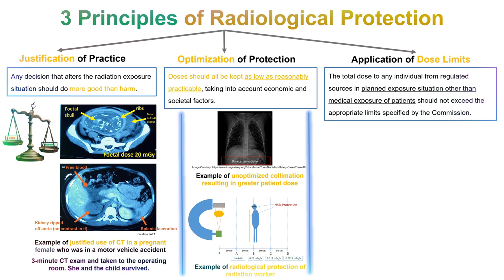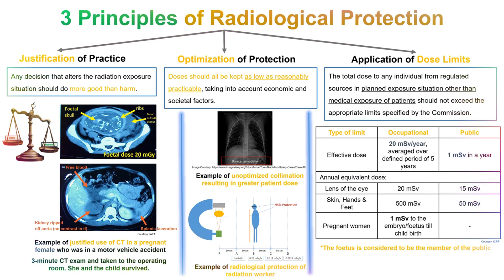The next principle: dose limits. By saying dose limits, we argue that radiation doses to exposed individuals should not exceed the defined permissible amounts of radiation, or should be prevented from exceeding these defined limits. This does not apply to patients' medical exposures. As the definition goes, the total dose to any individual from regulated sources in planned exposure situations, other than medical exposure of patients, should not exceed the appropriate limits specified by the commission. Radiation exposures are both monitored and controlled. The ICRP recommends dose limits based on the radiosensitivity of different organs and a corresponding whole body exposure.